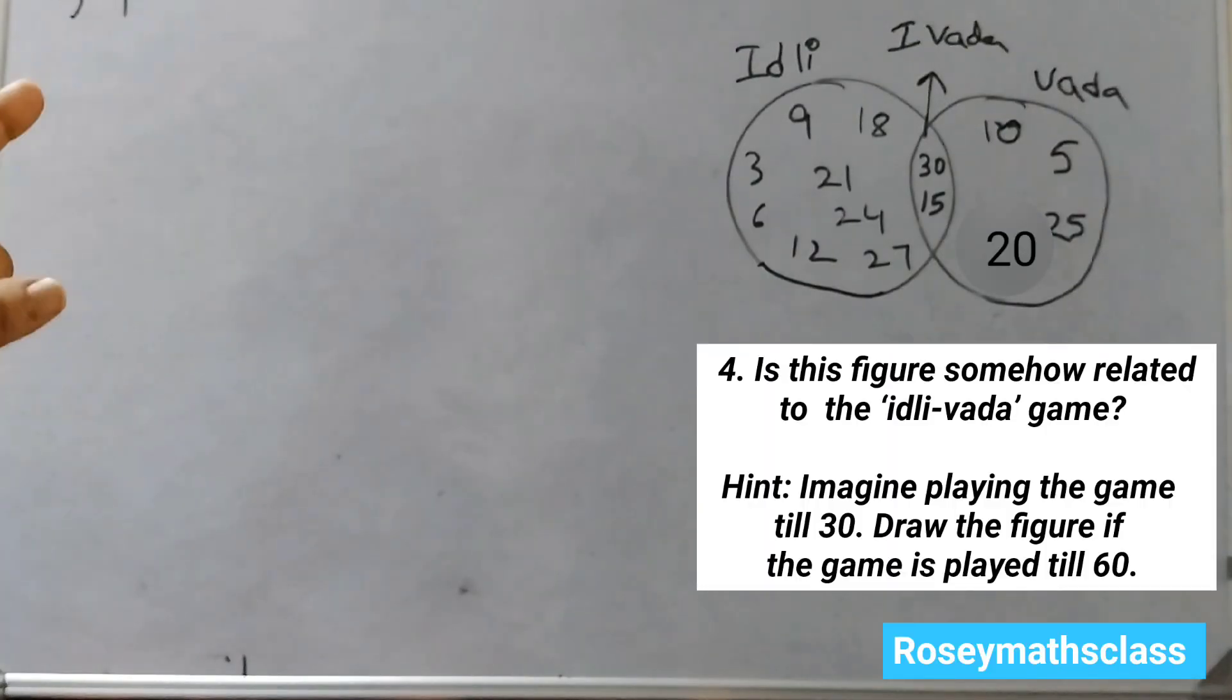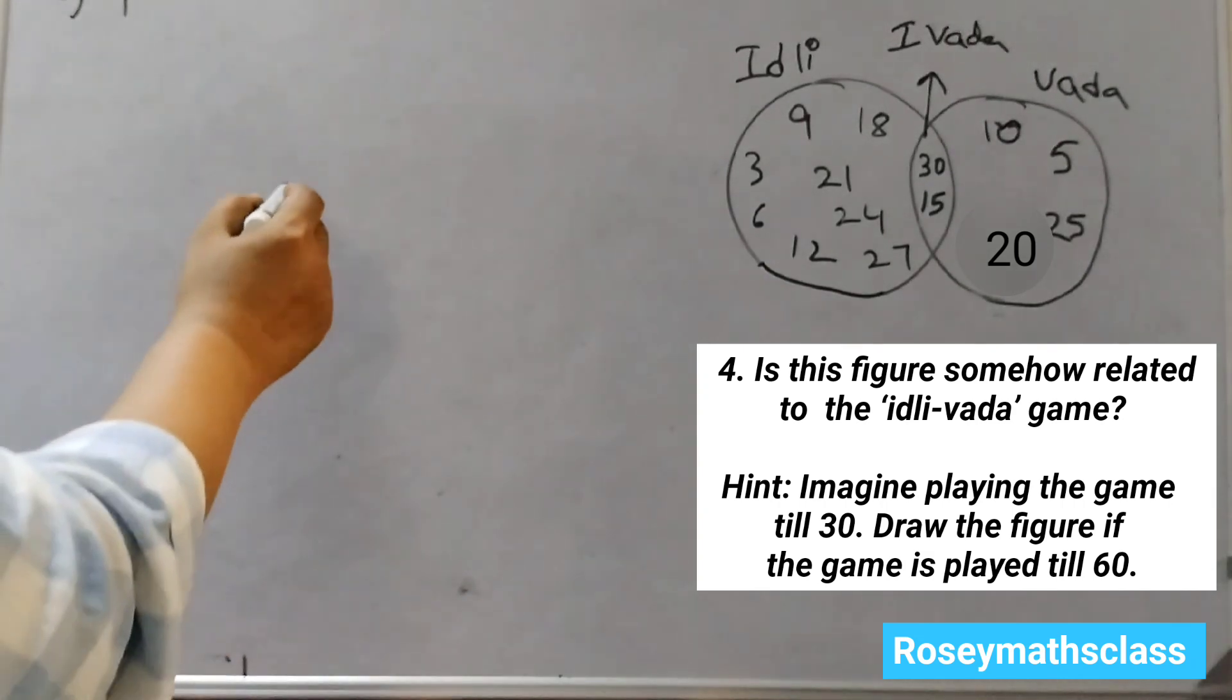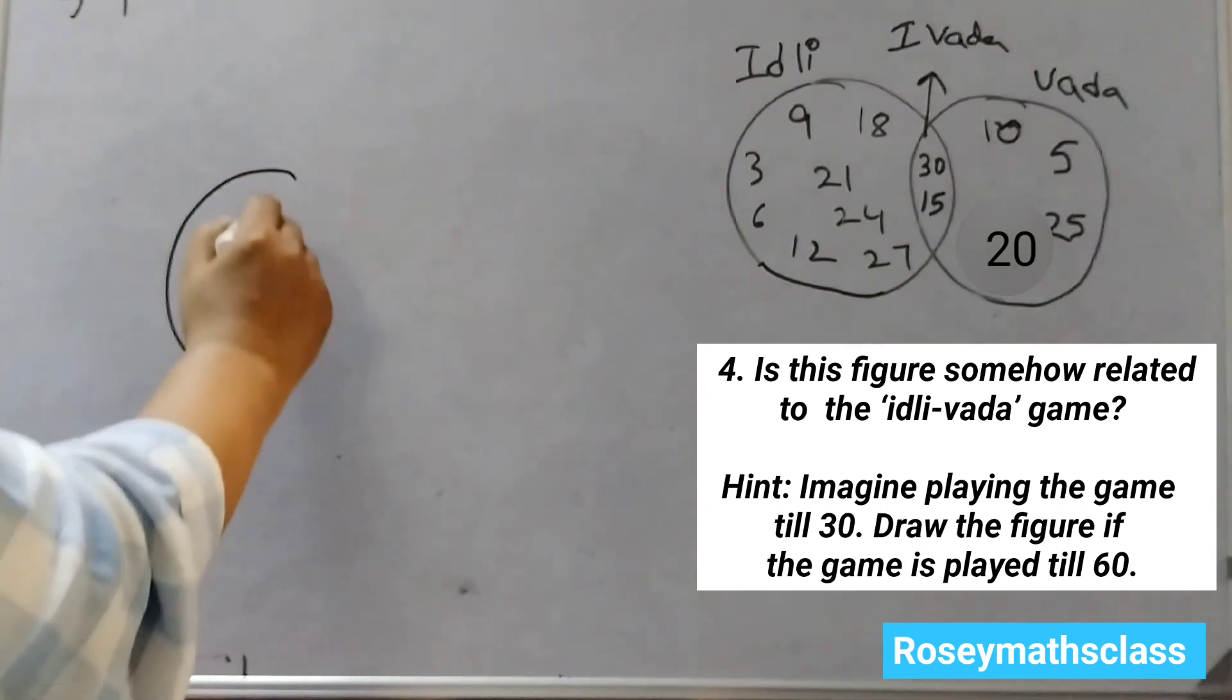So this figure is related to the Idli Vada game. Now we need to draw the figure if the game is played till 60. So what you can do is, you can make two circles first.